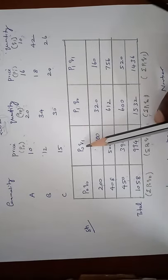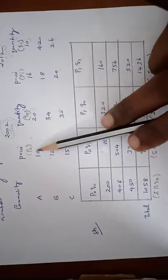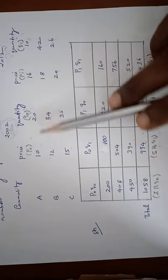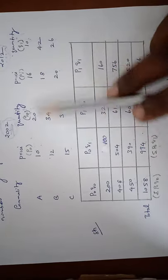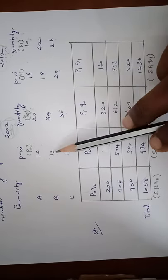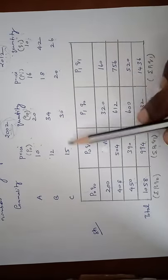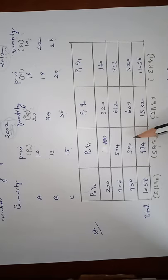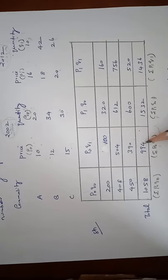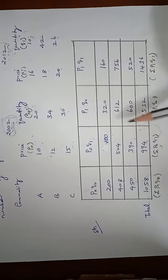Again P0Q1. So P0 into Q1, so 10 into 10 is 100. 12 into 42 is 504. Next one is 15 into 26 is 390. So the total value is 994. This is sigma P0Q1.